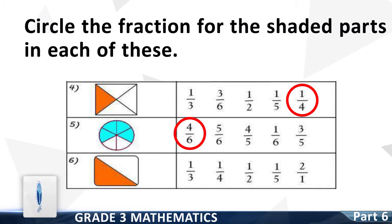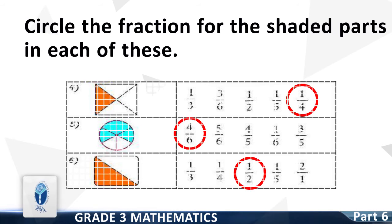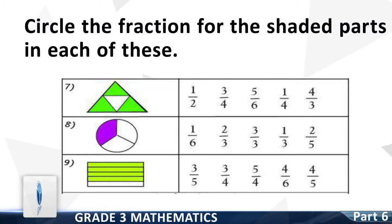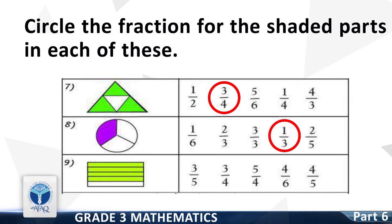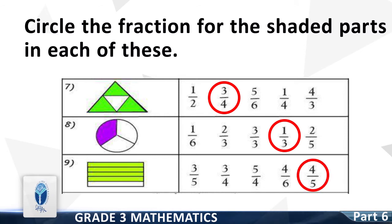Next, circle the fraction for the shaded part. Good, it is 1 by 2. Now, circle the fraction for the shaded parts. Good, it is 3 by 4. Now, circle the fraction for the shaded part. Good, it is 1 by 3. Now, circle the fraction for the shaded parts. Good, it is 4 by 5.